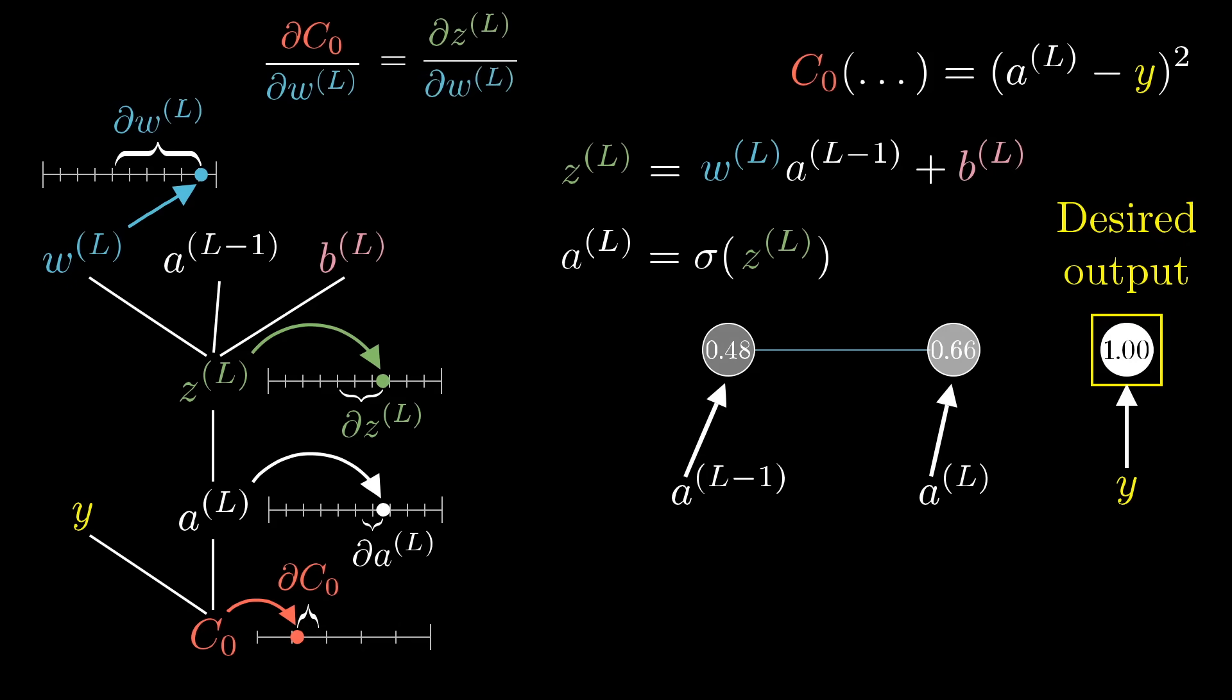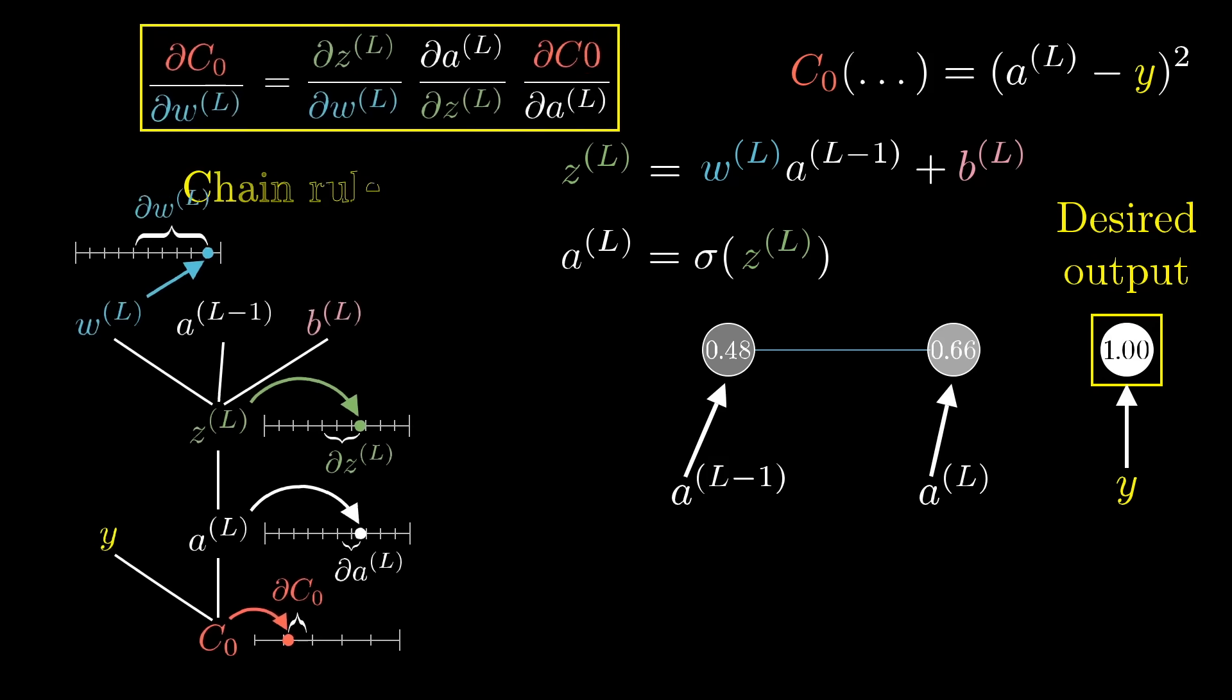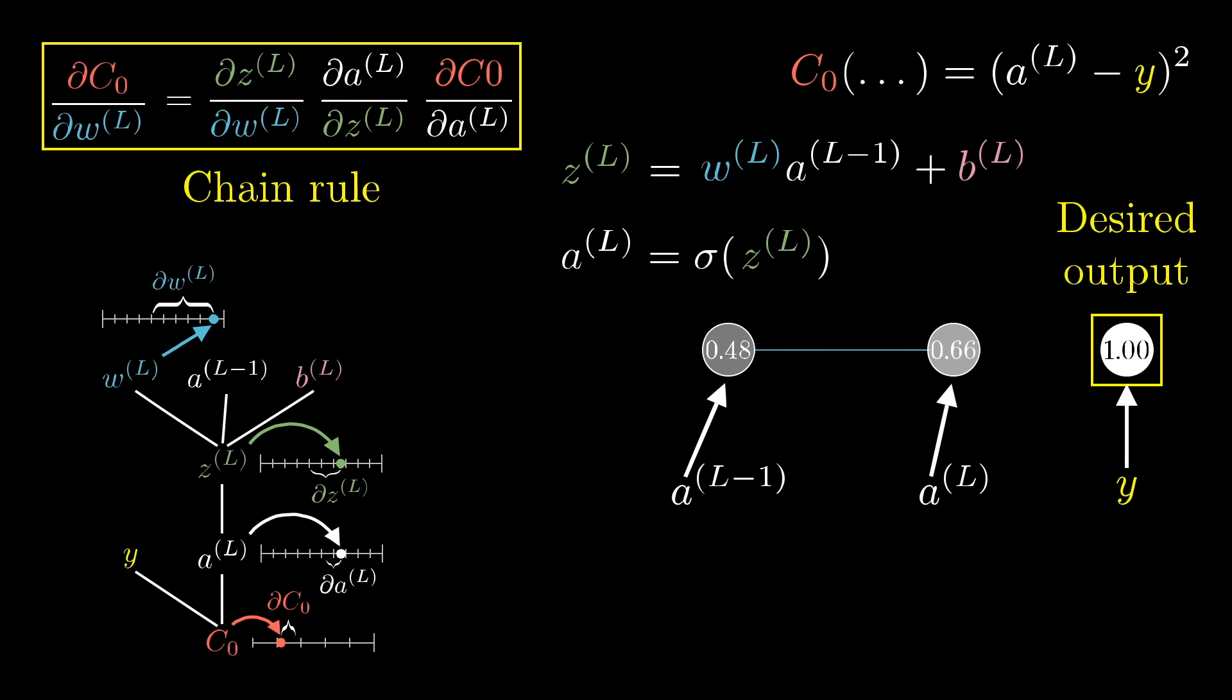That is, the derivative of z^l with respect to w^l. Likewise, you then consider the ratio of the change to a^l to the tiny change in z^l that caused it, as well as the ratio between the final nudge to c and this intermediate nudge to a^l. This right here is the chain rule, where multiplying together these three ratios gives us the sensitivity of c to small changes in w^l.